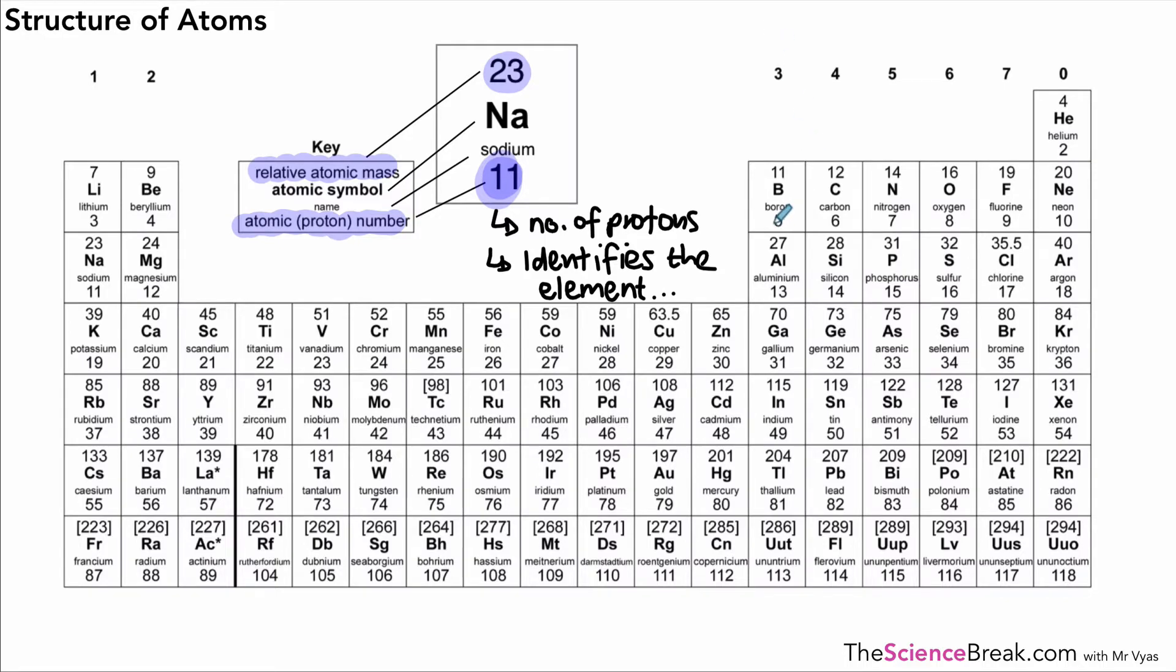For example, if I had a proton number of 5, that's boron; 6 would be carbon; 37 would be rubidium; and magnesium would be 12. So the proton number identifies the element as well as telling you the number of protons. The number at the top is the number of protons plus the number of neutrons. So the relative atomic mass tells you protons plus neutrons together, and those, as we've already covered, are found in the nucleus.